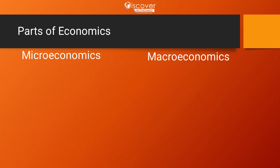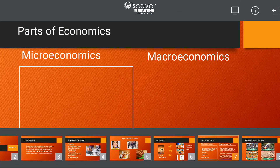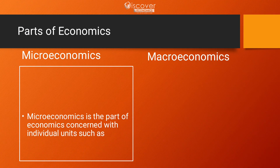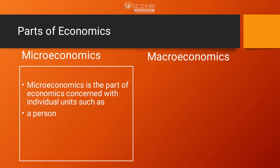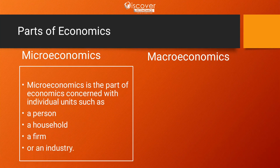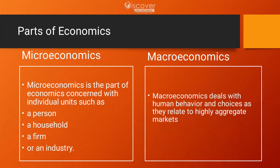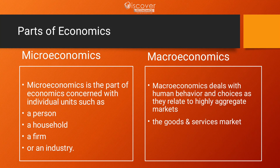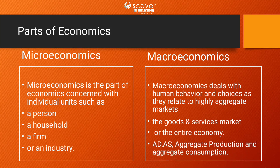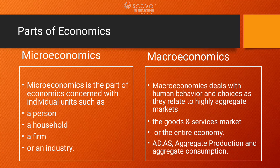There are two parts of economics: microeconomics and macroeconomics. Microeconomics deals with the individual parts of the economy. For example, when we talk about the choice of a single person, a single firm, or a single industry — these are parts of microeconomics. Whereas in macroeconomics, we talk about aggregate demand, aggregate supply, aggregate production, and aggregate consumption, meaning we are talking about the entire economy.